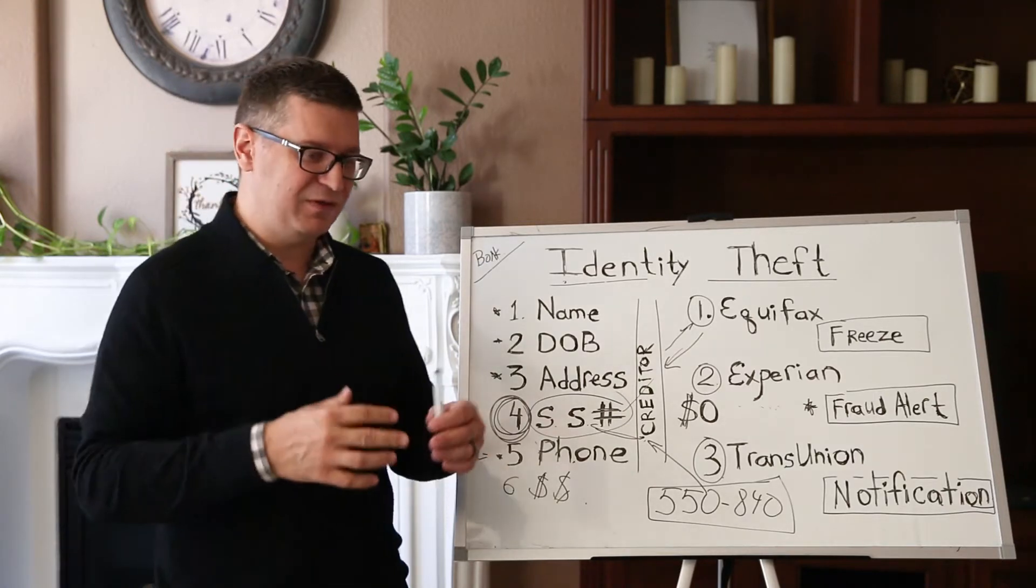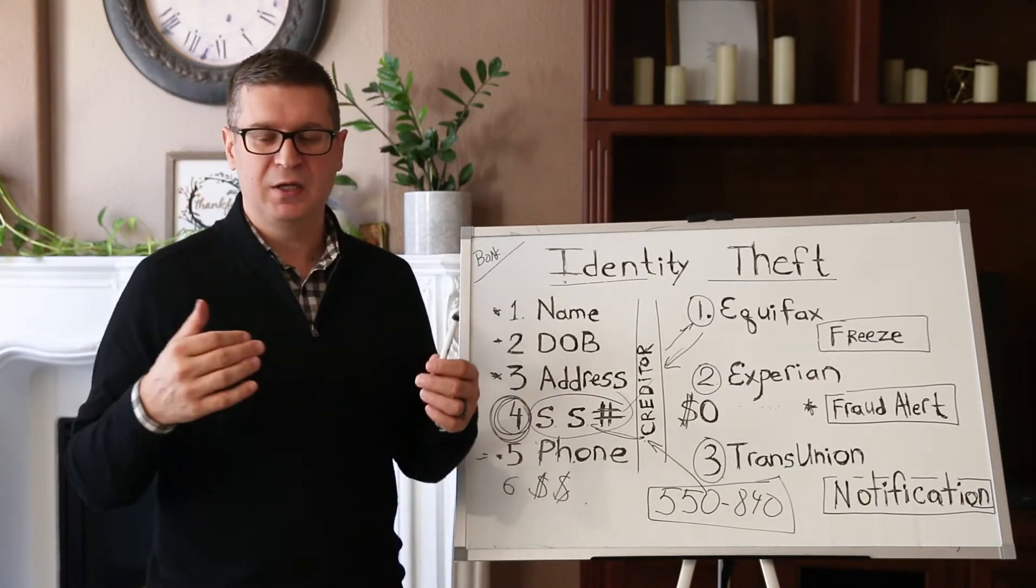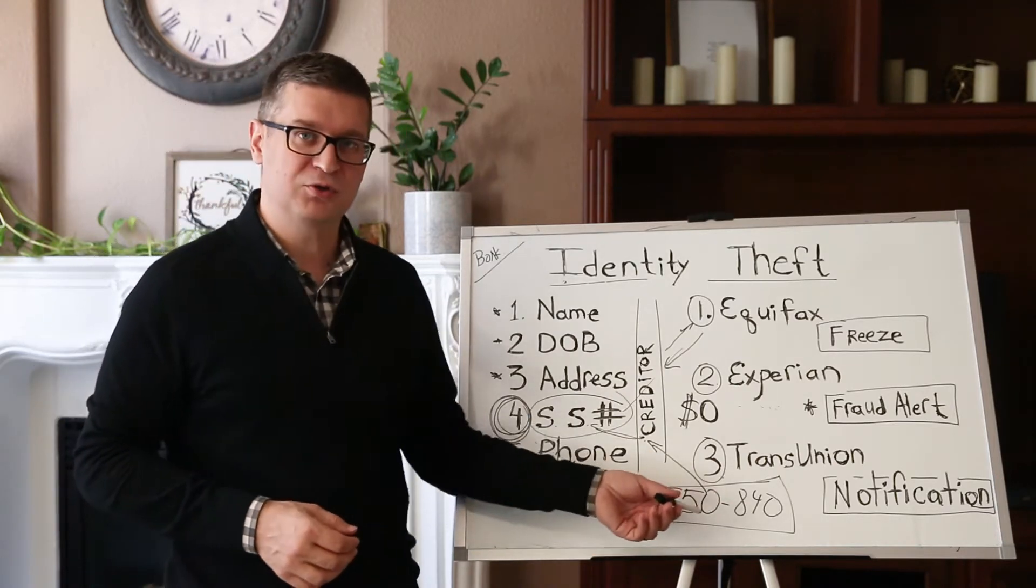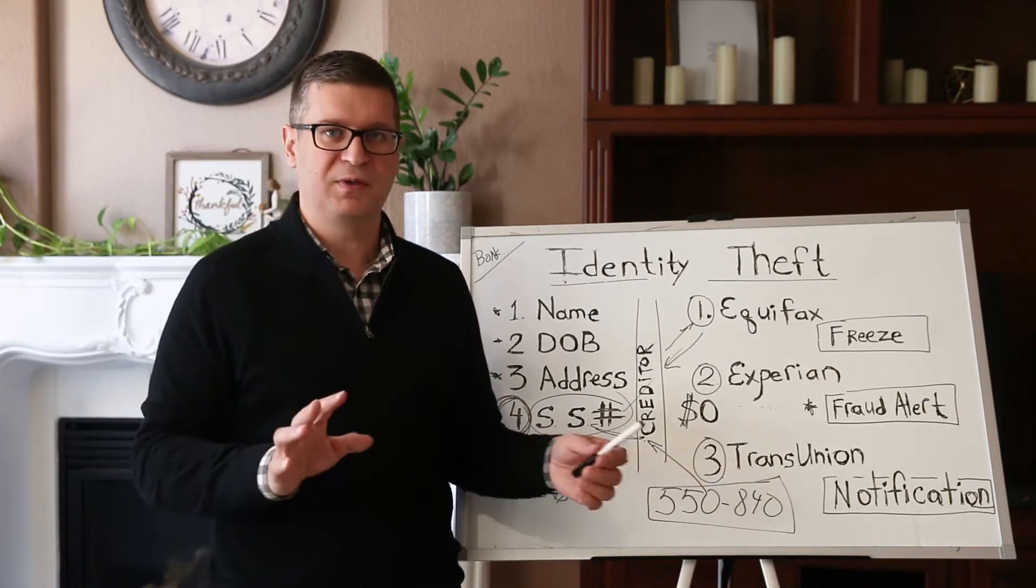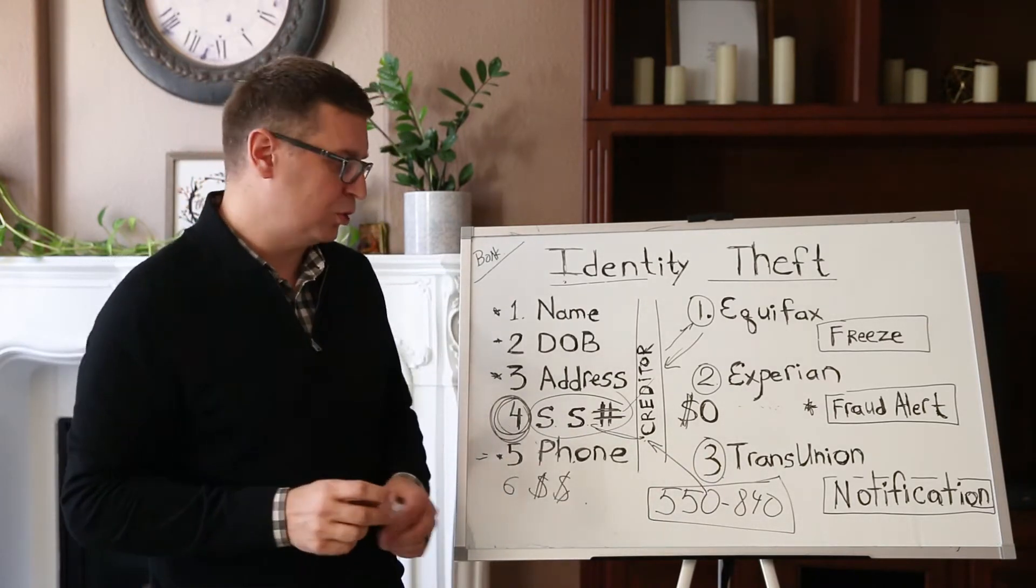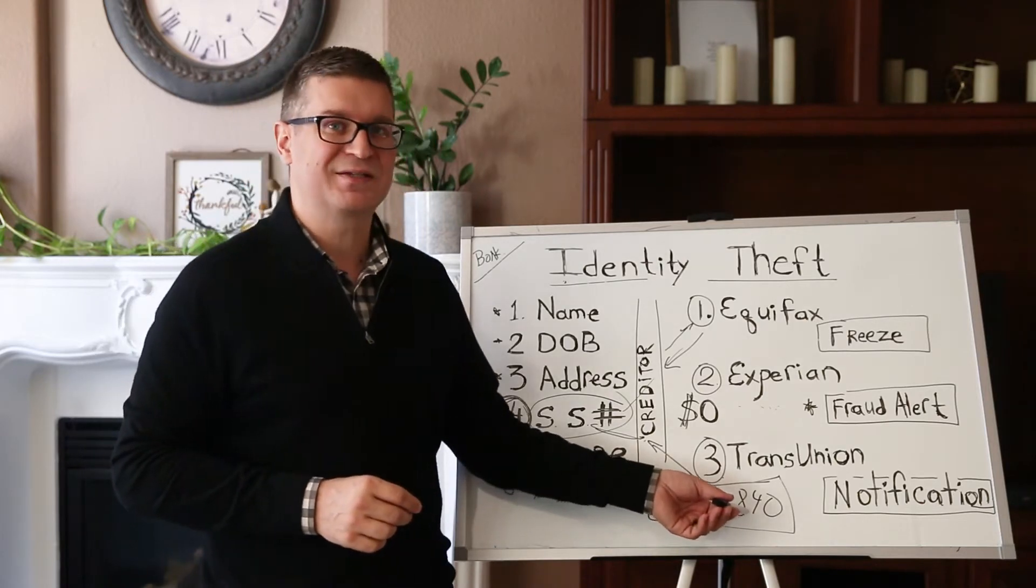Now if you have a lot of bankruptcies or late payments, your FICO score is probably going to be around 500. If you have good credit, your FICO score is going to be around 700. And if you have excellent credit, your score can be anywhere from 680 to 840.